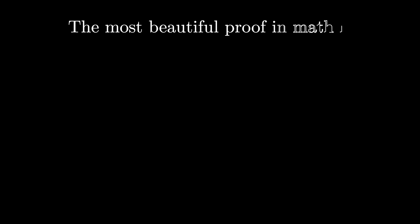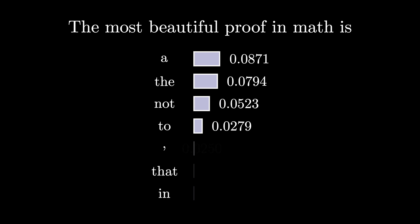So armed with our language model, we can now find a way to generate text. Let's say I start with the prompt "the most beautiful proof in math is." Now I have a distribution for all the possible next words. The way we pick words is by sampling from this distribution. What this means is that if the probability of a word appearing next is 0.08, then I pick it with probability 0.08. I could do this by maybe choosing a random number between 0 and 1 and figuring out which word my number falls into.